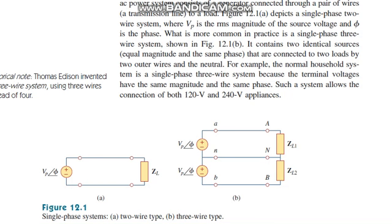As you can see in the diagram, figure 12.1 depicts a single-phase system. In the single-phase two-wire type system, there is a ground and a positive connection with two wires. Vp is the RMS magnitude, and phi is the phase angle — as we know from phasor notation, that is the RMS value of the source voltage.